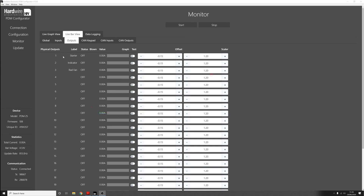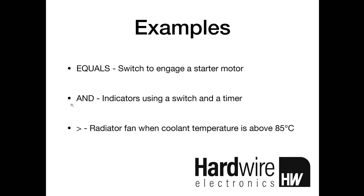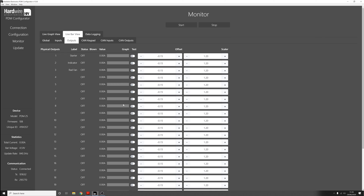We'll now look at the second example, which is using the AND operation. We're going to take a switch and AND it with a timer to turn on the indicators. We'll have a timer that's constantly going high and low, and AND this with a switch input. This means that whenever the switch is high and the timer is high, the output will be high. When the timer goes low, the output will be low. This means that whenever we press the button, the indicators will go on and off with the timer, and when the button's not pressed it will always be off.